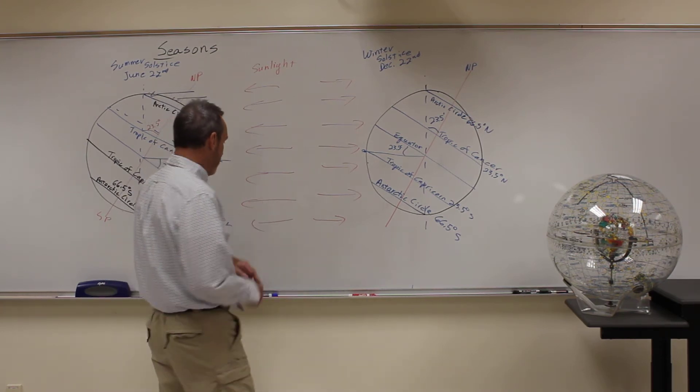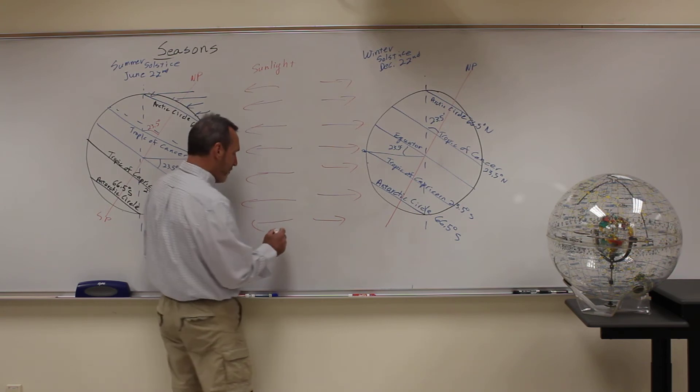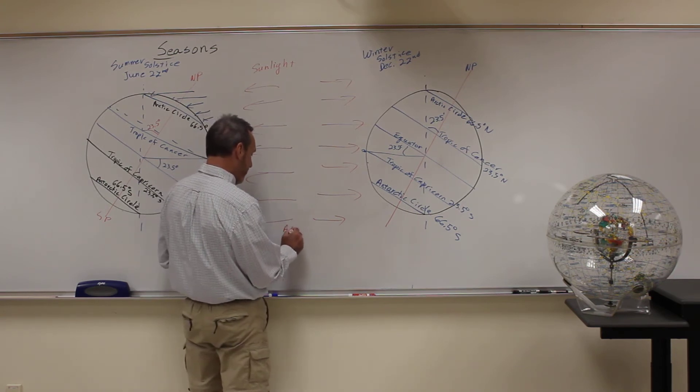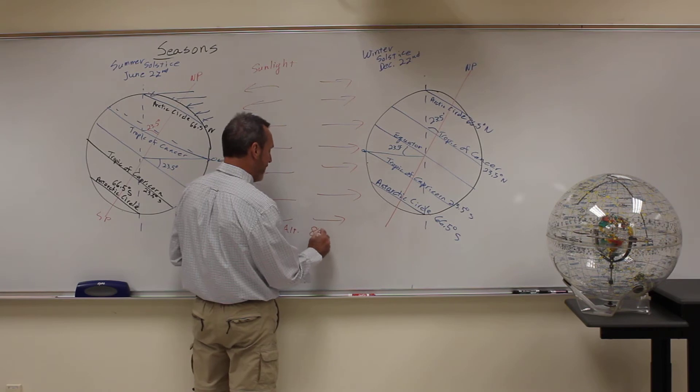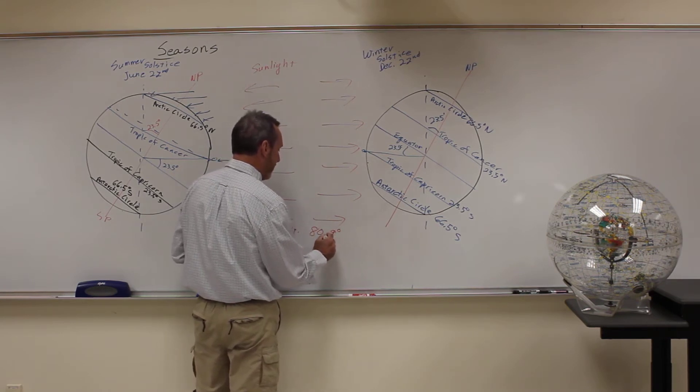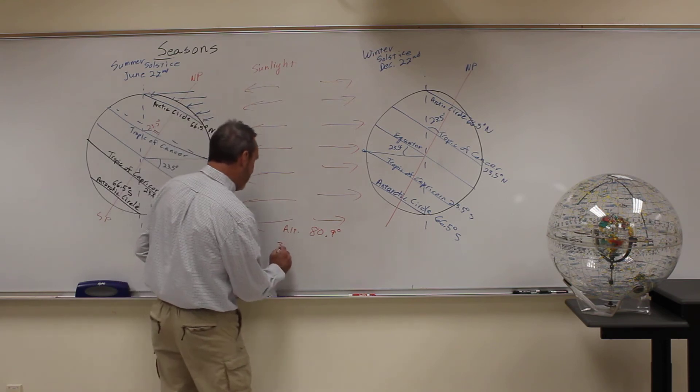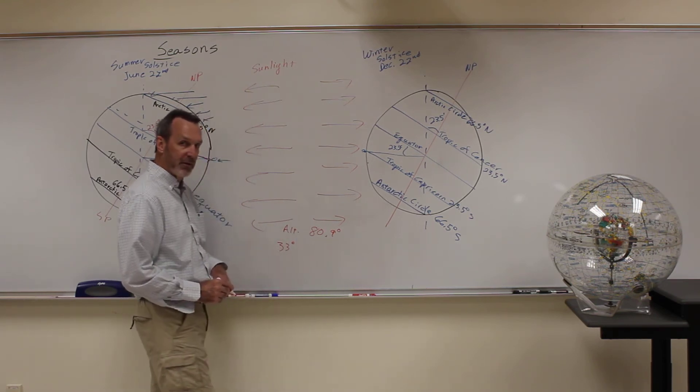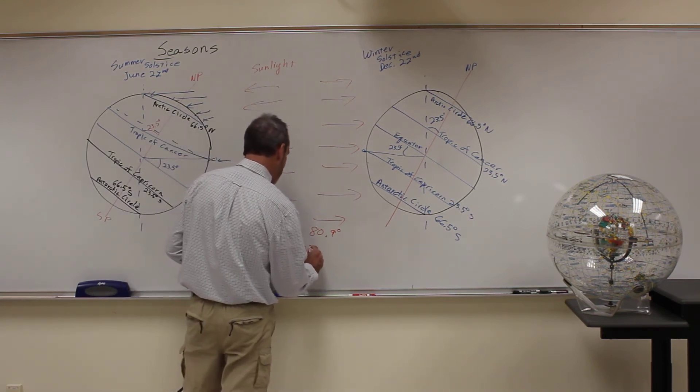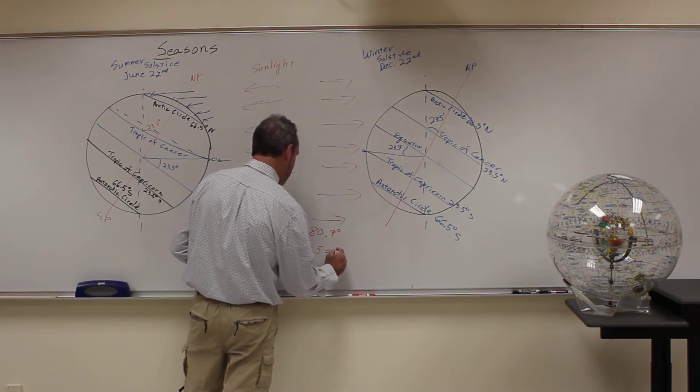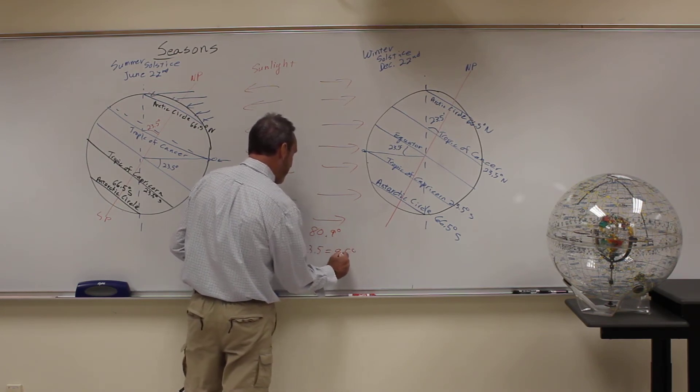Now, remember, we did it for Commerce. The maximum altitude of the Sun for Commerce was 80.9 degrees. But look, the latitude of Commerce is 33 degrees, right? Guess what? 33 minus 23 and a half is equal to 9 and a half degrees.